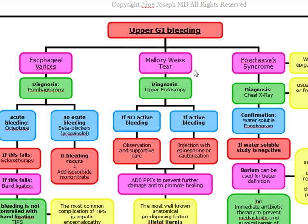How do patients present with upper GI bleeding? They present with dizziness, lightheadedness, weakness, and nausea. The key findings we look for are vomiting blood — also known as hematemesis — and melena, which are dark, tarry stools. On physical exam, these patients often present with abdominal pain, hypotension, and tachycardia.